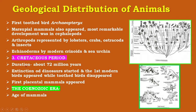The Cretaceous period lasted about 72 million years. The word 'creta' means chalk, characterizing the calcareous Cretaceous rocks found all over the world. Its name was given by G.G. d'Omalius d'Halloy in 1822. The climate of the Cretaceous period was somewhat cooler than the Jurassic. In the Cretaceous period, extinction of the dinosaurs started, the first modern birds appeared while toothed birds disappeared, and the first placental mammals also appeared. This concluded the Mesozoic era.